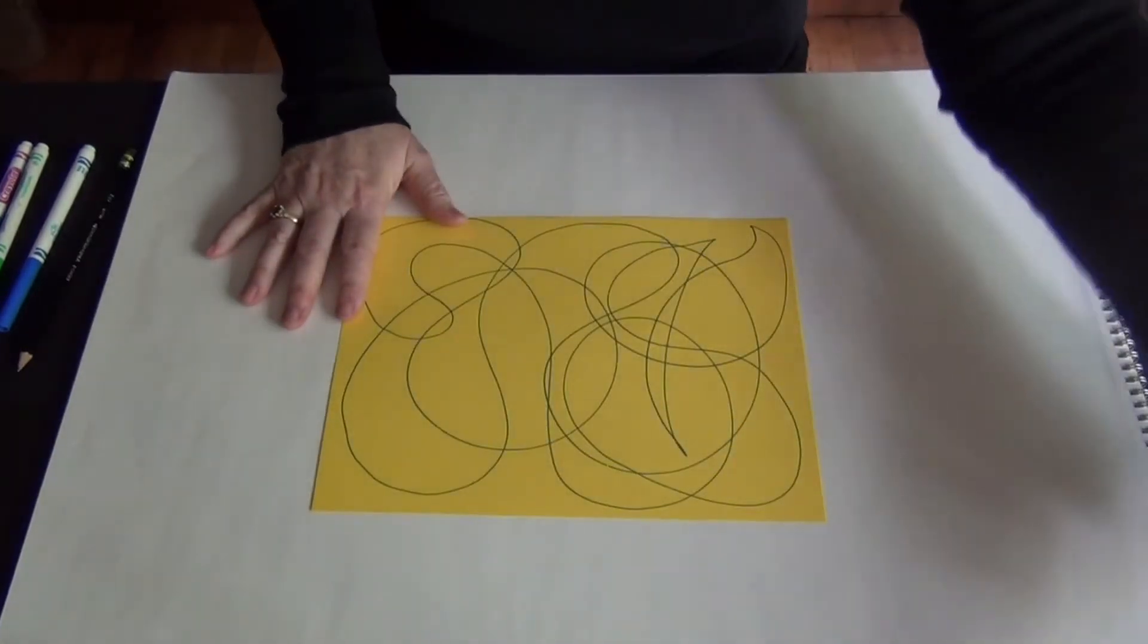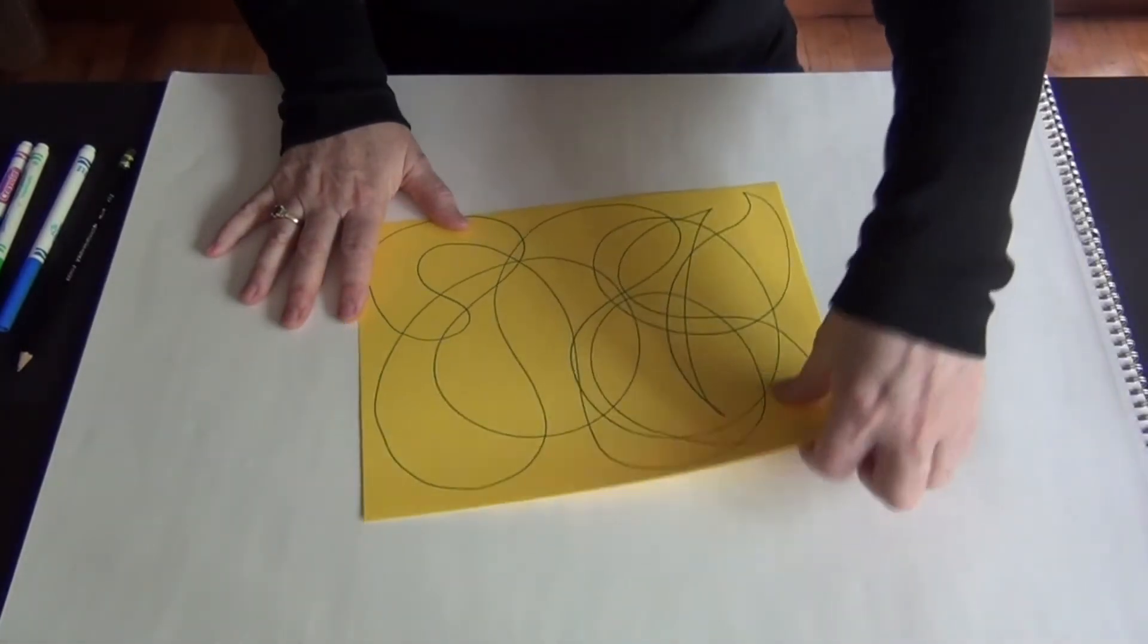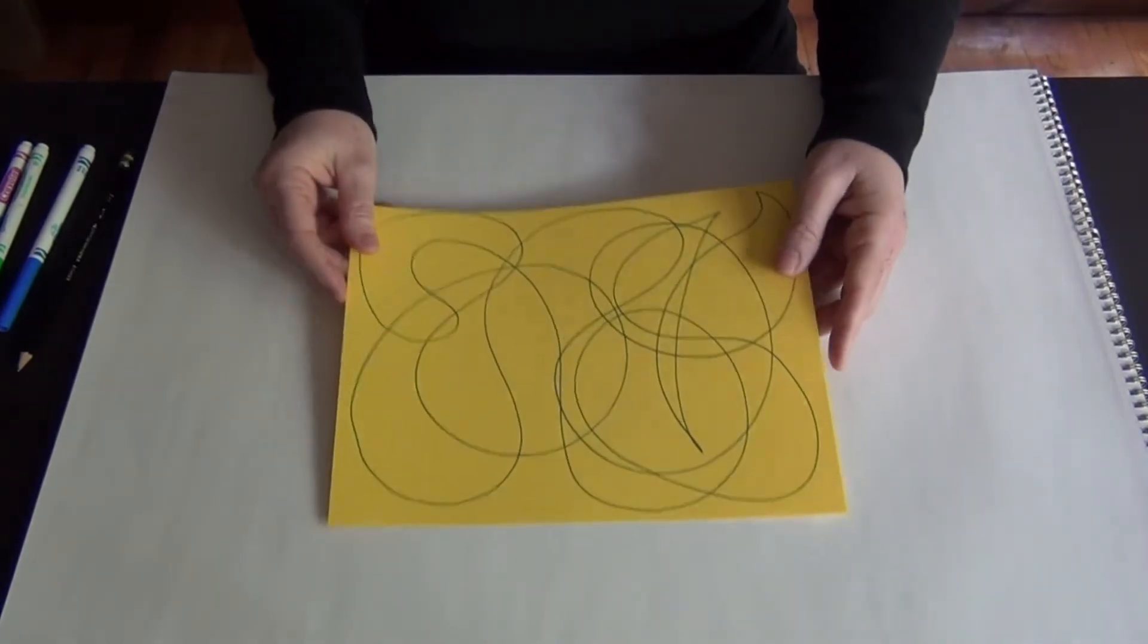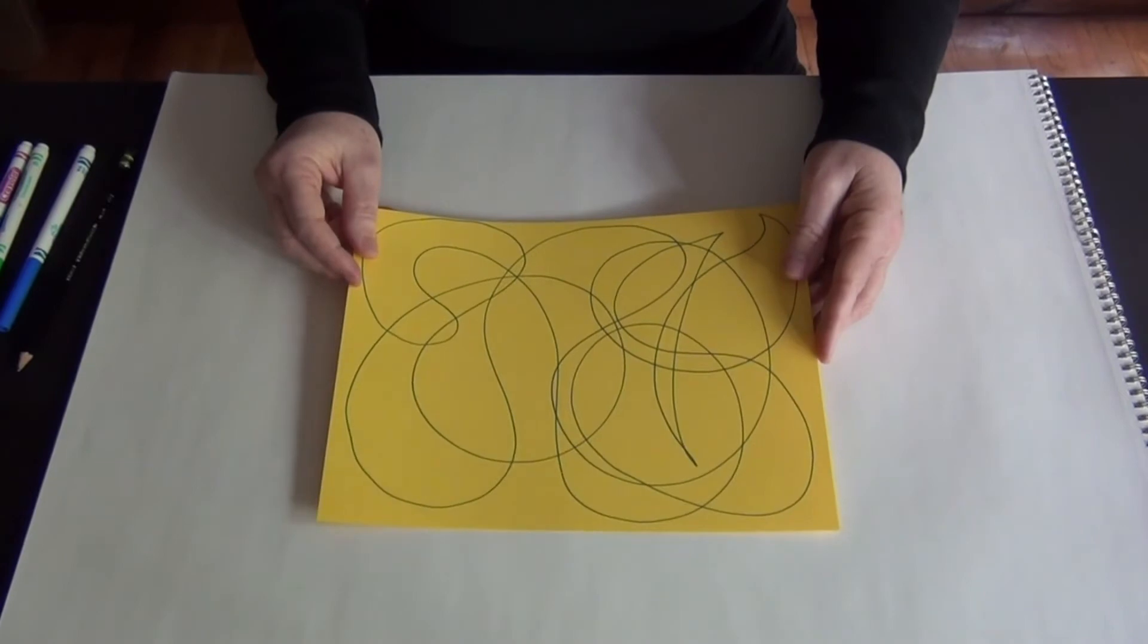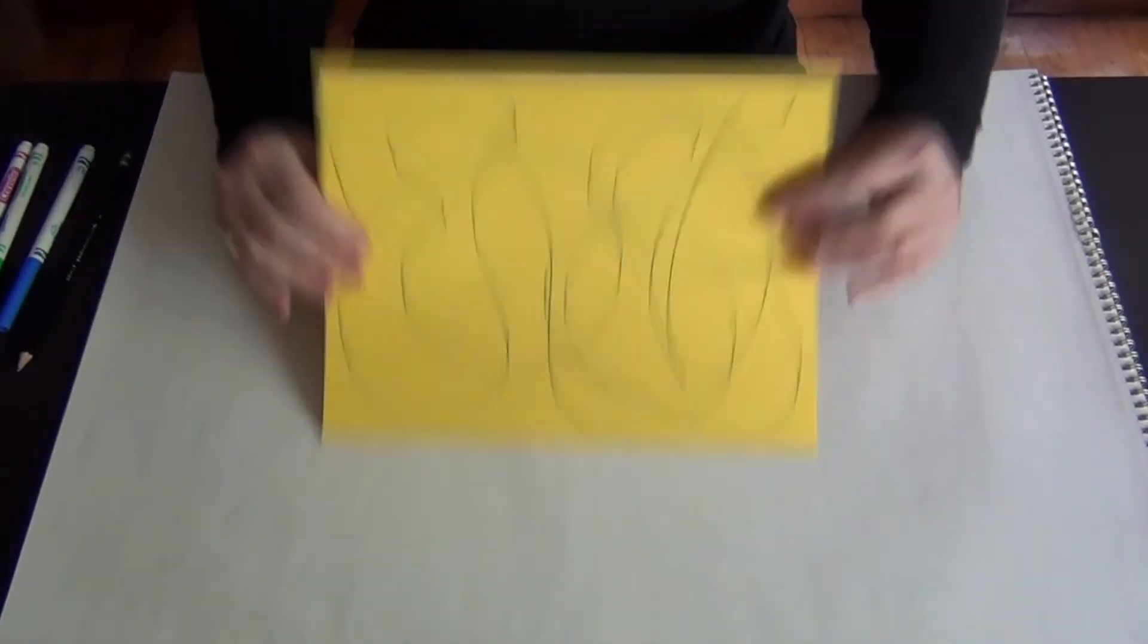And the third thing that you can do is you can take this - now I did this one on cardstock so it'll be a little thicker but we're going to make a puzzle out of this. Now we have the blank side, you see how I used the green pen on this side. I'm going to use the purple pen on the other side, make another loopy drawing.